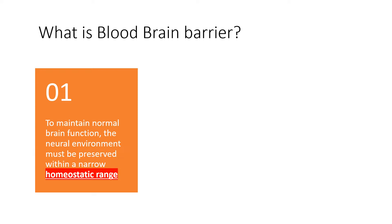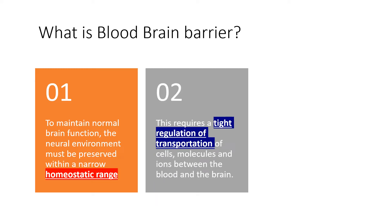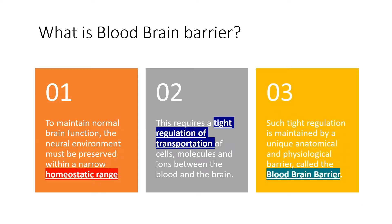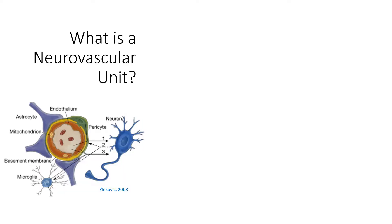What is the blood-brain barrier? To maintain normal brain function, the neural environment must be preserved within a narrow homeostatic range. This requires tight regulation of transportation of cells, molecules, and ions between the blood and the brain. Such tight regulation is maintained by a unique anatomical and physiological barrier called the blood-brain barrier.